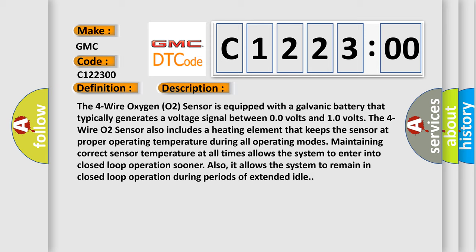The four wire O2 sensor also includes a heating element that keeps the sensor at proper operating temperature during all operating modes. Maintaining correct sensor temperature at all times allows the system to enter into closed loop operations sooner. Also, it allows the system to remain in closed loop operation during periods of extended idle.